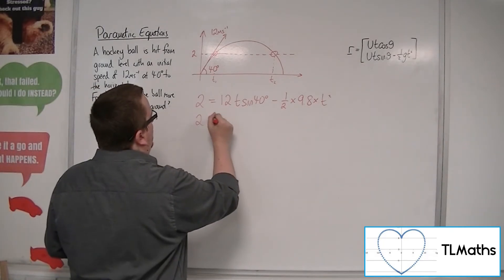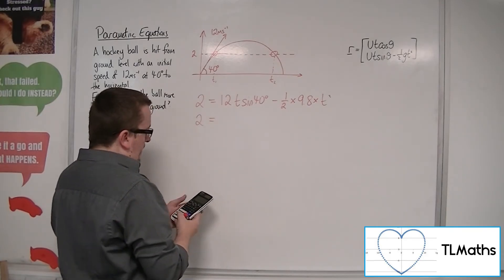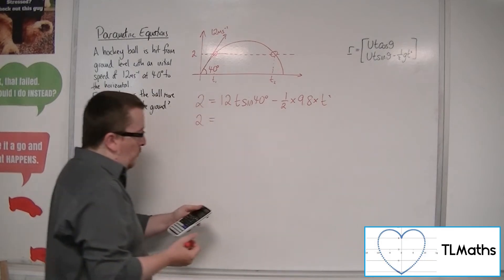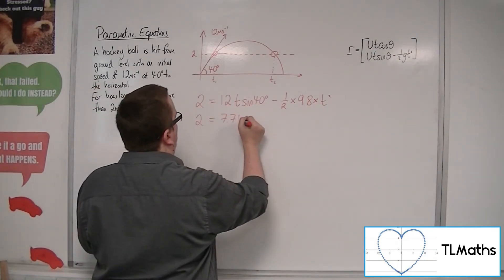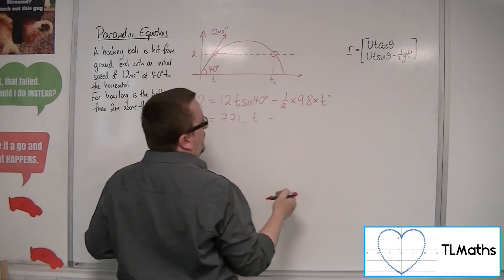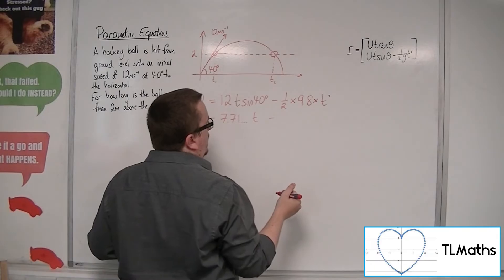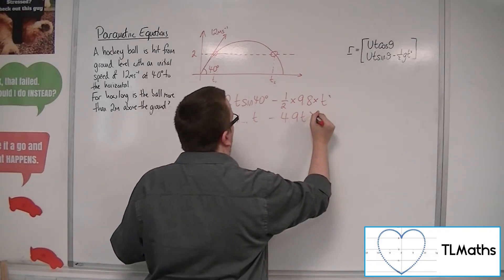So we've got 2 equals, well, 12 times sine 40, it won't be nice, 7.71, etc. So let's just pop that in for the moment. t. Take away 1 half times 9.8, so that's 4.9 t squared.